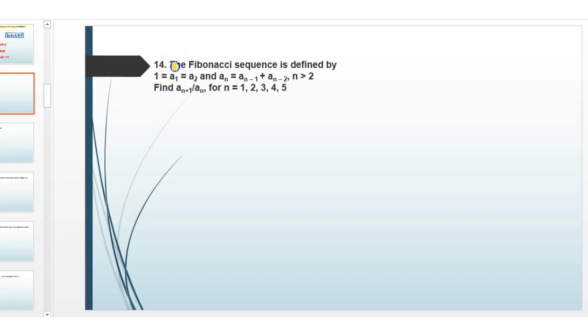Hello everyone. Welcome back to my channel. In this question, the Fibonacci sequence is defined by A1 equals A2 equals 1 and An equals An minus 1 plus An minus 2 where N is greater than 2.